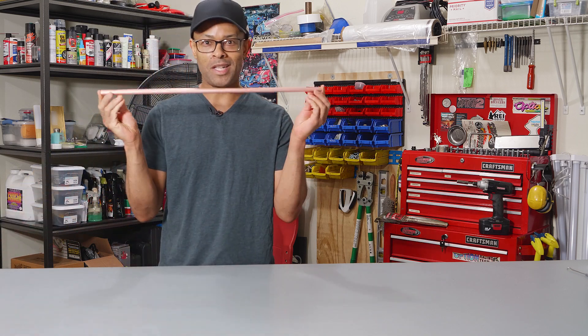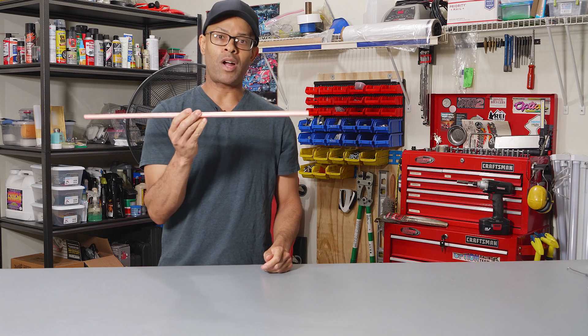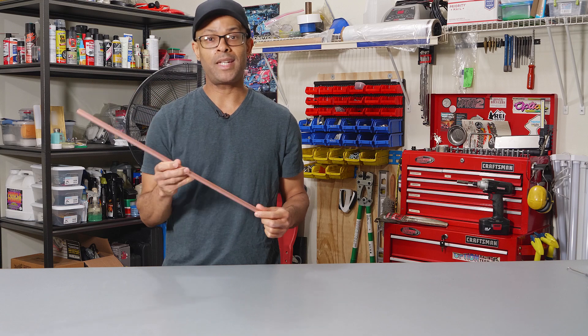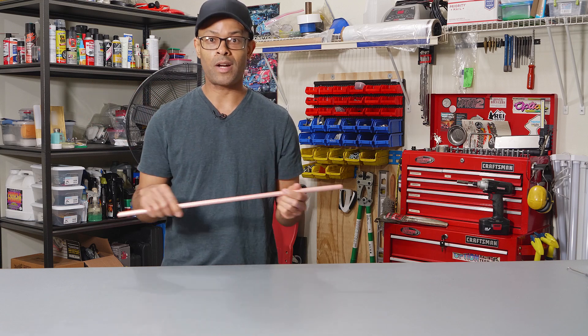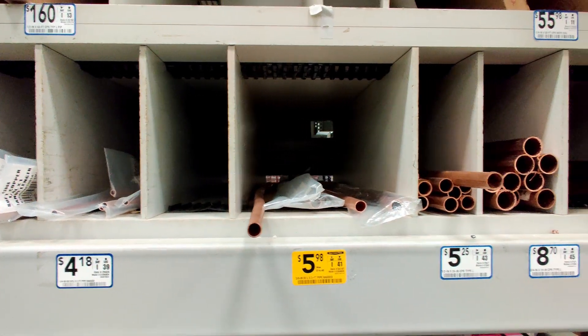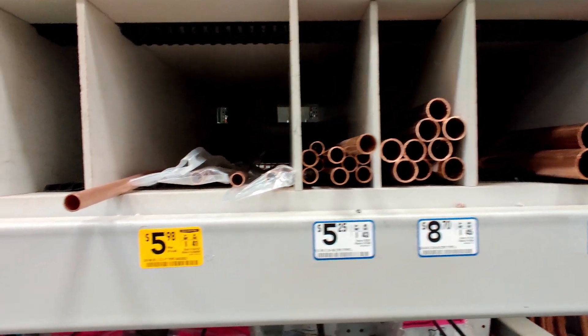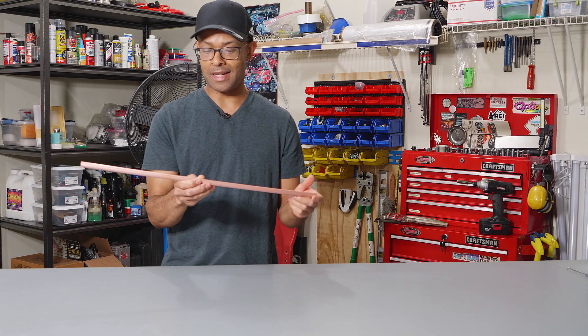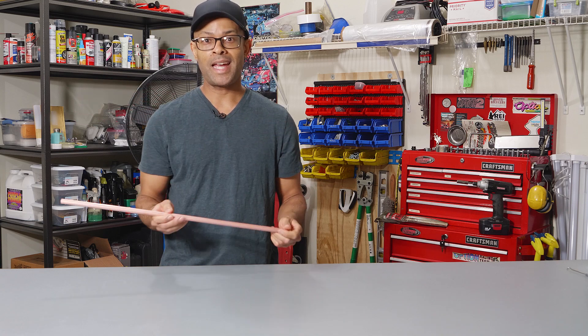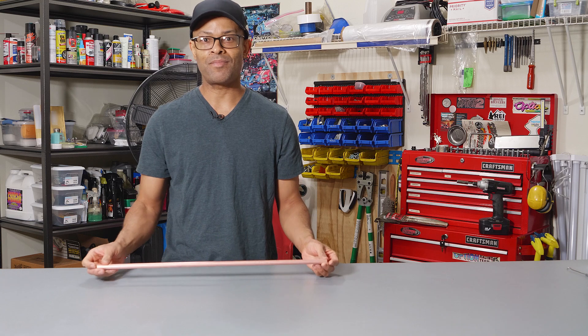Here's what we're going to be using - copper tubing that you can get at any hardware store. A length like this and a size like this goes for about five dollars, maybe six at the most. We can make, I would say, for sure 10 pieces out of this, and that's going to be way better than ordering just two.